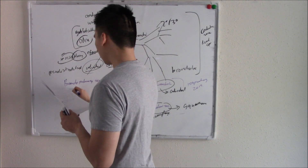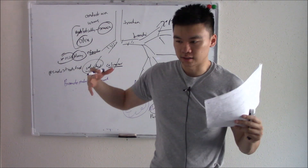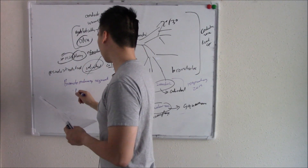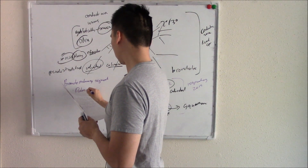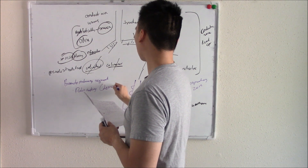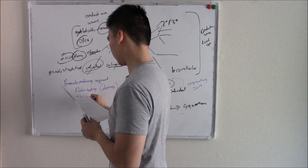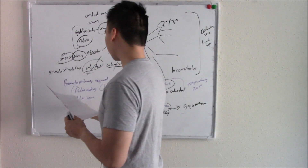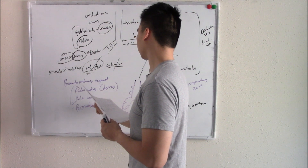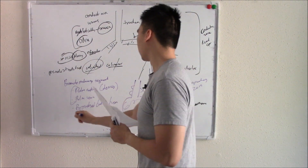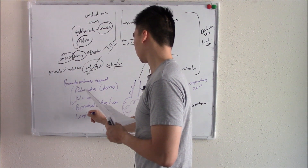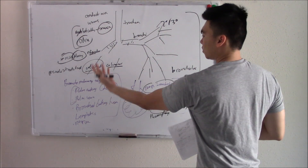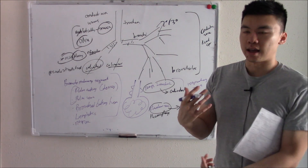Let's talk about blood supply. Your lungs function in respiration — taking in oxygen and releasing CO2. Your heart pumps blood to your lungs: the pulmonary artery pumps deoxygenated blood to your lungs, it gets oxygenated, and returns to your heart via the pulmonary vein. Your lungs also need their own blood supply so the lung tissue doesn't die — that comes from the bronchial artery and bronchial veins. Every bronchopulmonary segment has its own branches of pulmonary artery, pulmonary vein, bronchial artery, bronchial vein, lymphatics, and nerve supply.